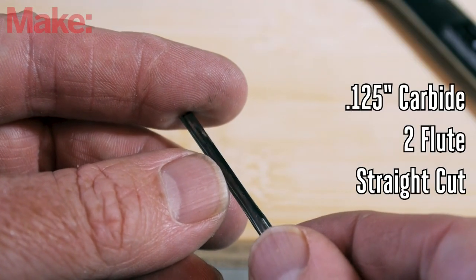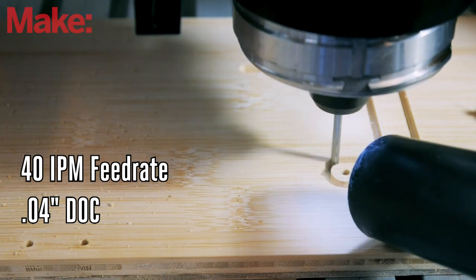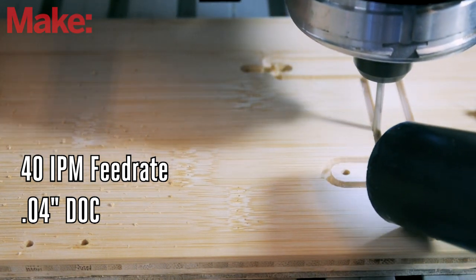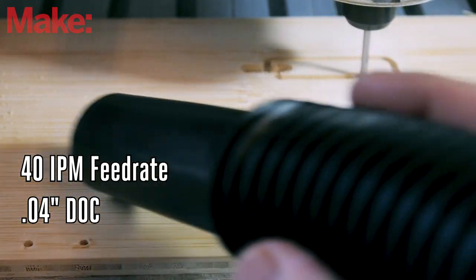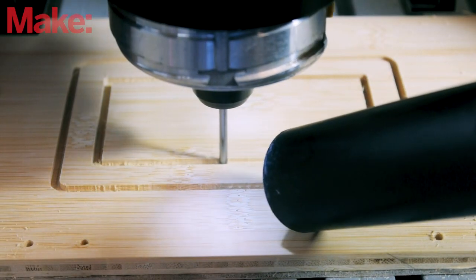For the wood, I'm changing to this 2-flute straight cut bit so I get clean edges on both the top and bottom. I've increased my feed rate to 40 inches per minute and my depth of cut to 0.04 inches. I'm also plunging straight into the material. I don't like the finish the helical ramps leave on wood.